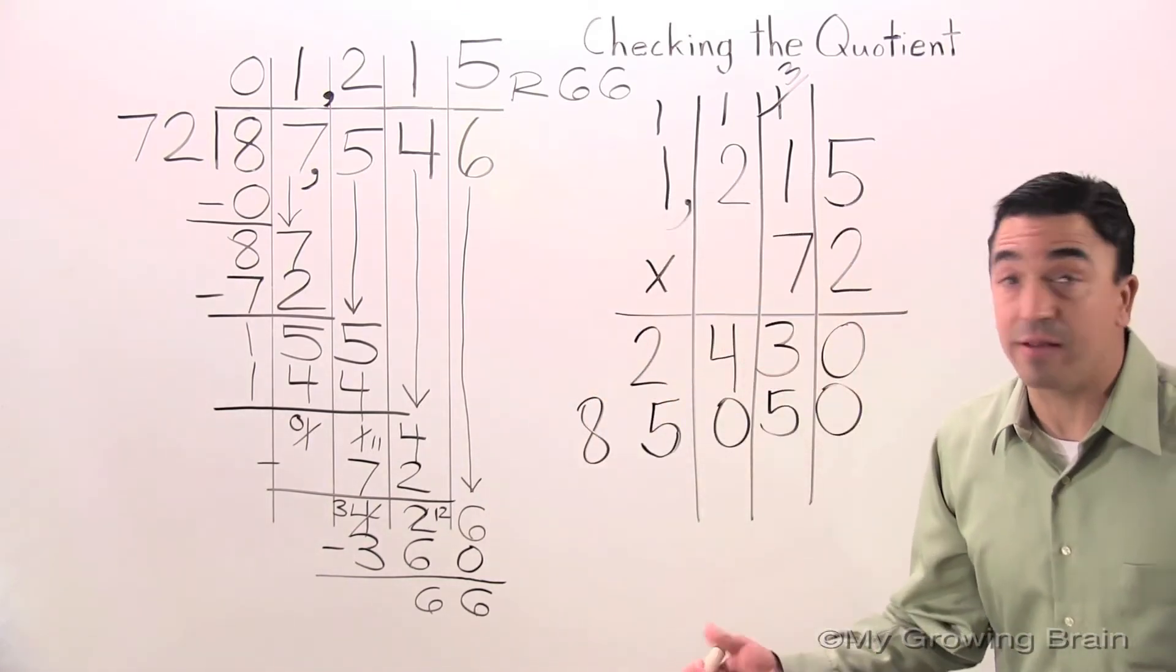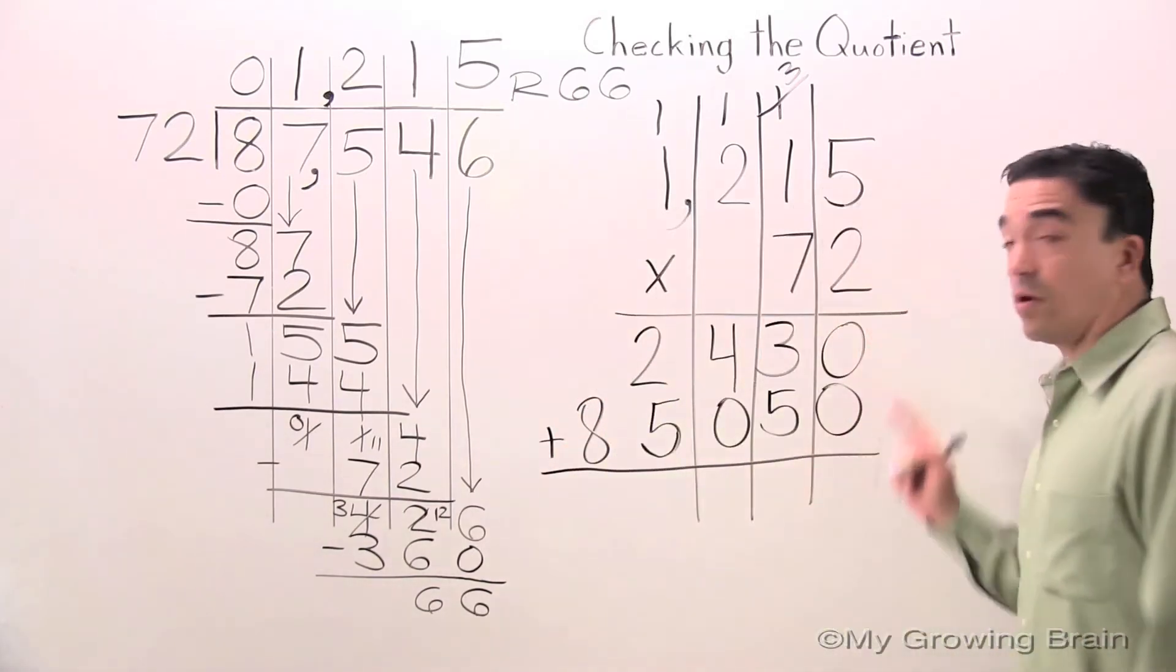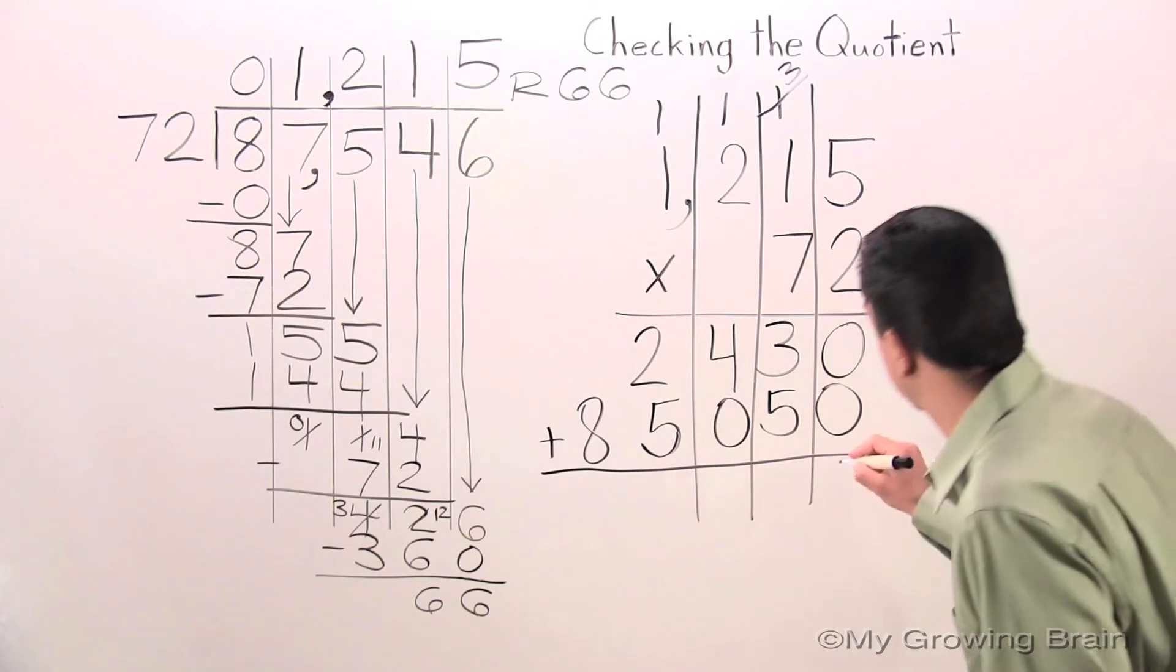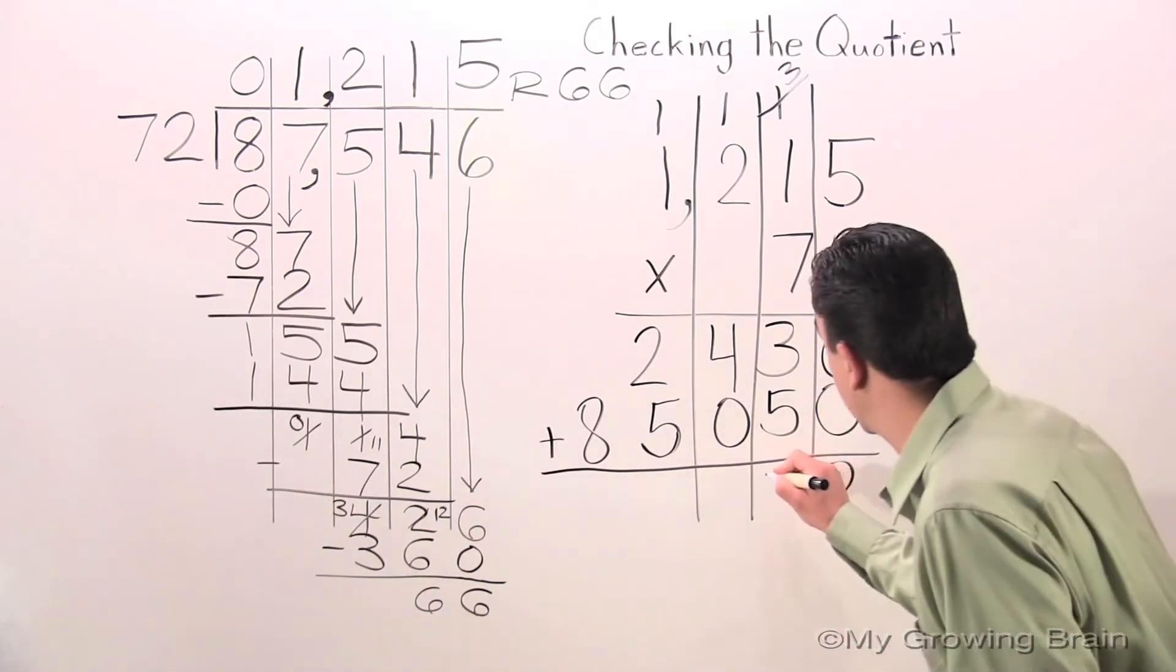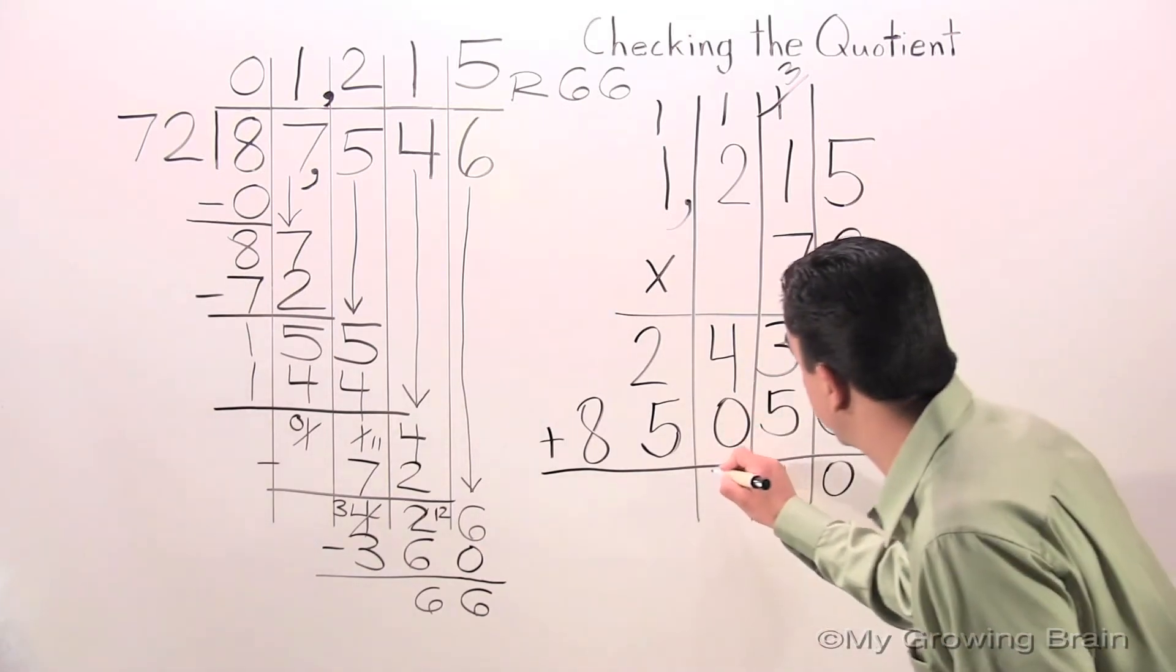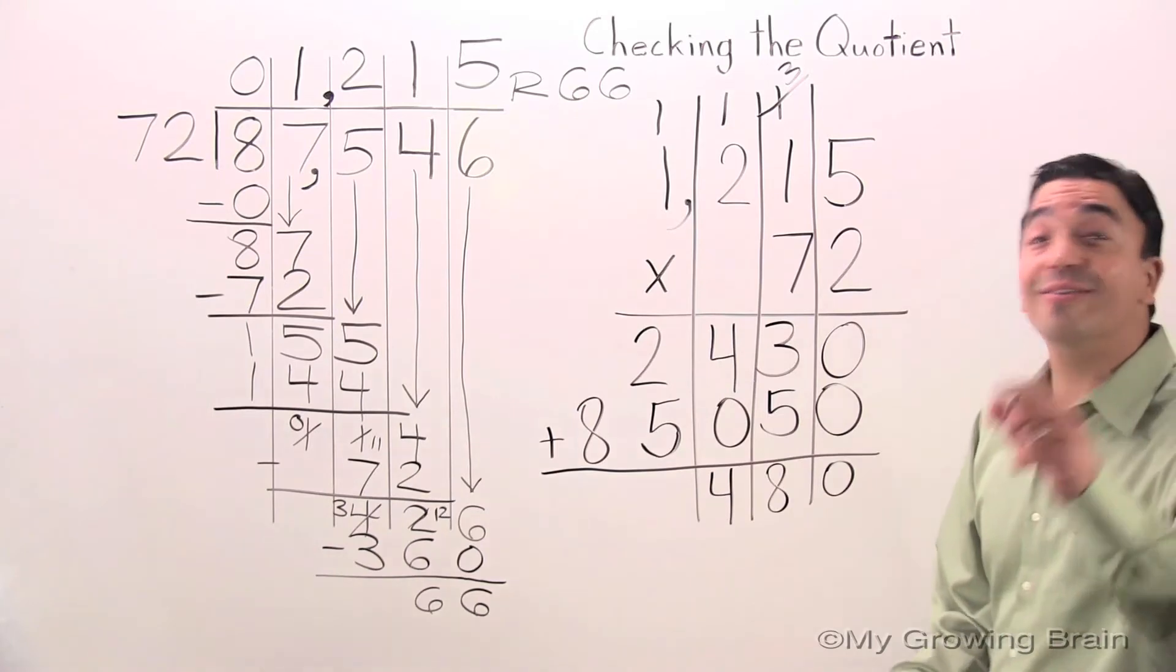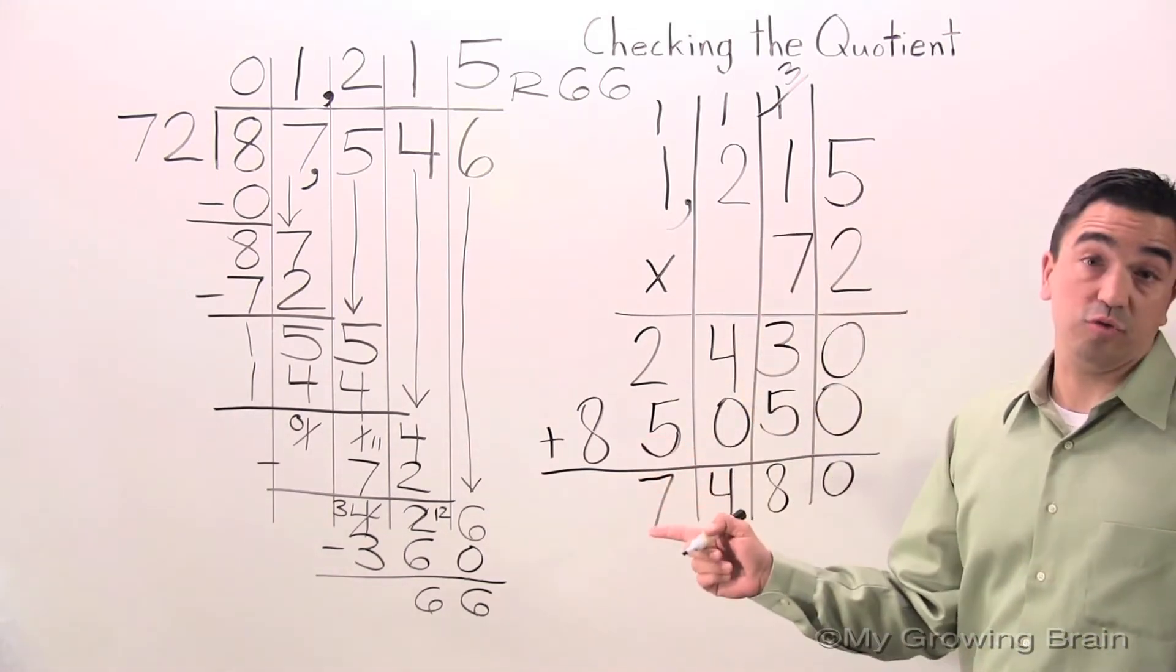Now we're going to add. 0 plus 0, 0. 5 plus 3, 8. 0 plus 4, 4. 5 plus 2, 7. Just drop the 8.